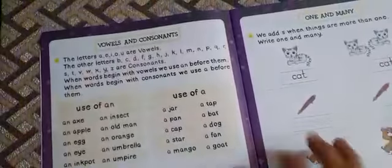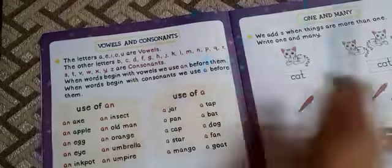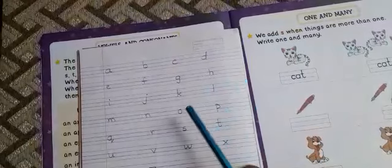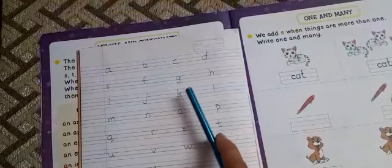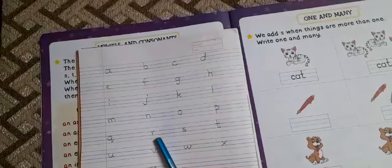Today we will learn vowels and consonants. See children, there are 26 letters in the English alphabet. You have already learnt this alphabet.